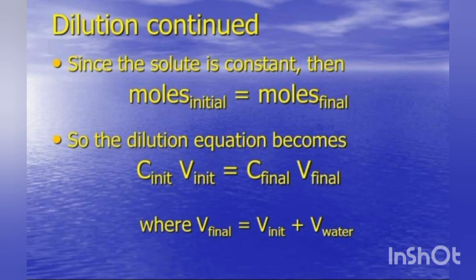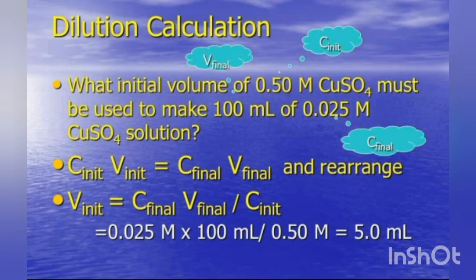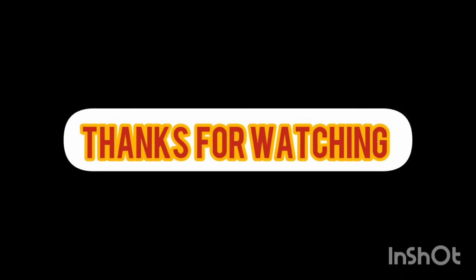To calculate dilution: since solute is constant, moles initial = moles final. The dilution equation is: C₁V₁ = C₂V₂ (concentration multiplied by volume). We take an example where we have to find the initial volume using the formula: V_initial = (V_final × C_final) / C_initial. This is all about our today's video. Thanks for watching — see you in the next video.